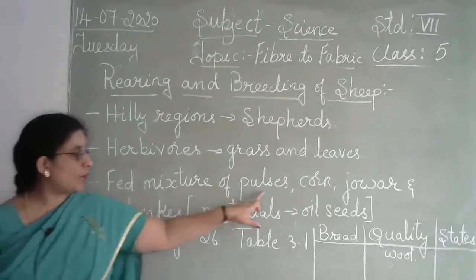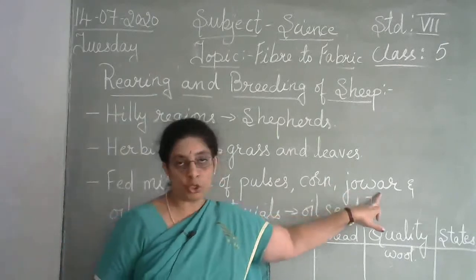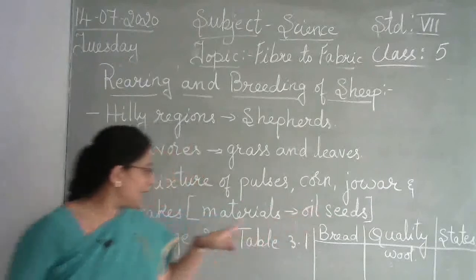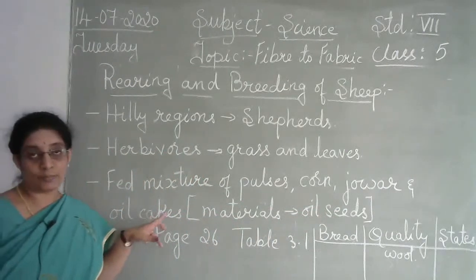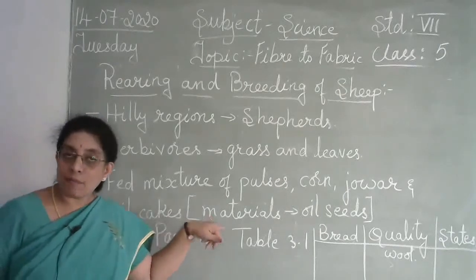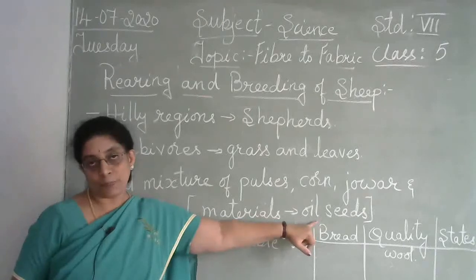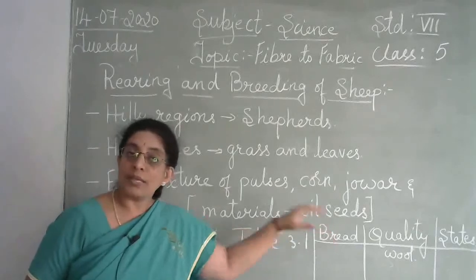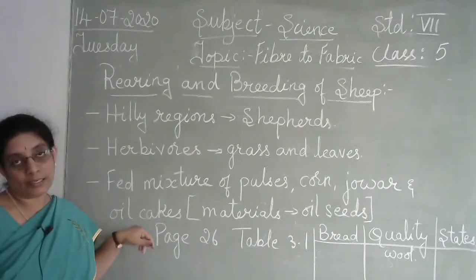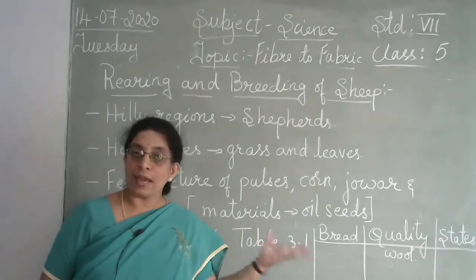Sheep are also fed corn (also called maize), jowar, wheat, and oil cakes. Oil cakes are not the kind you eat — they are the leftover material remaining after oil is extracted from oil seeds. Different varieties of oil seeds are pressed, and after oil extraction, the remaining material is called oil cake. This is all fed to the sheep to help produce a large quantity of wool.